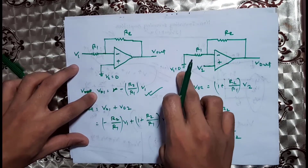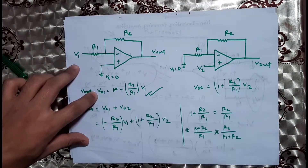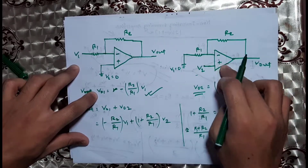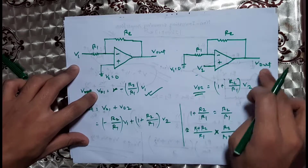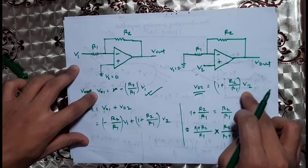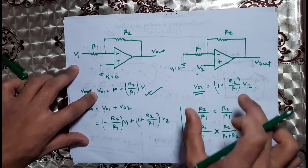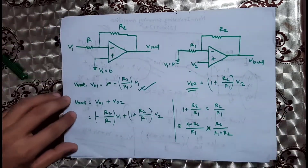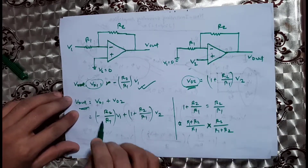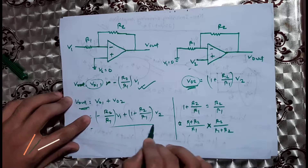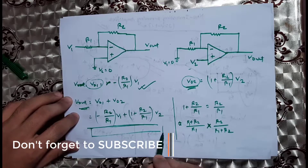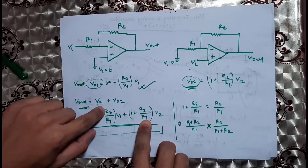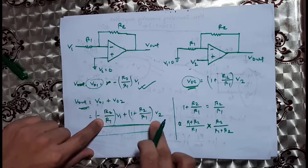Now the second case: when V1 is zero and V2 is active. We compare the output sequence. The non-inverting amplifier gain is 1 plus R2 divided by R1, so the output voltage due to V2 uses this gain formula.